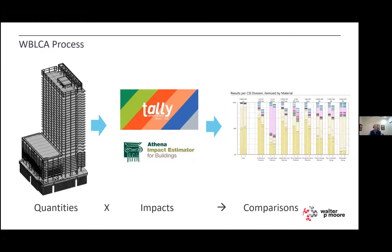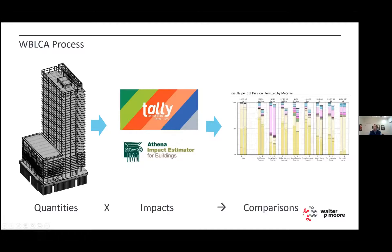The basics are almost simple: you get your quantities — from a Revit model is a great place to pull them — and then you use an LCA tool. We use Tally and Athena; there's also One Click and other tools. Note that an LCA tool is different from a supply chain accountability tool like EC3. Then you perform comparative analyses to see where the hotspots are and find opportunities for improvement.